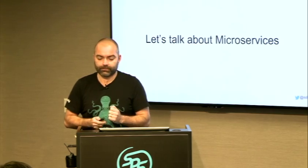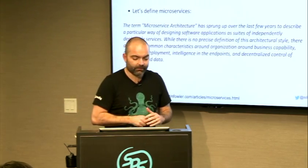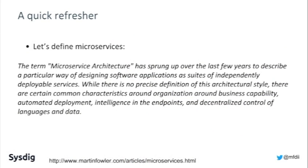Let's talk about and define microservices. There's no precise definition around this architectural style, but it has certain common characteristics — mainly organizing around business capability, having automated deployment, intelligence as much as possible in the endpoint so the edge can make decisions about its environment, and decentralized control of languages and data. Decentralized control is very important, especially in the world of DevOps — empowering teams so they can make their own decisions.